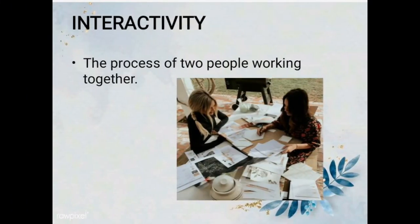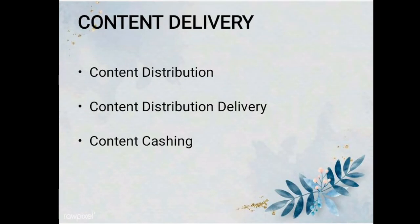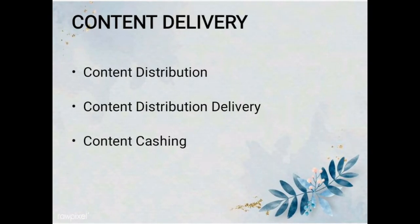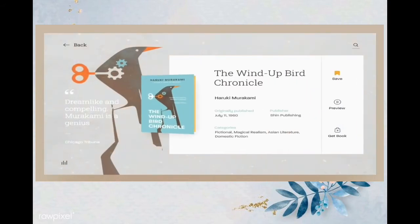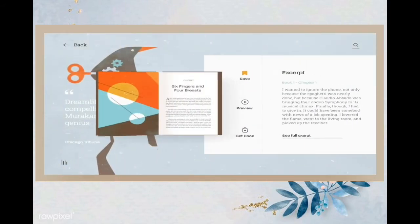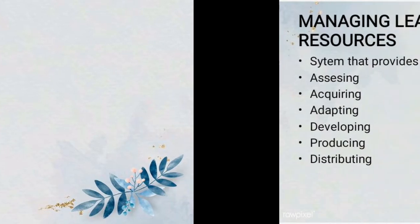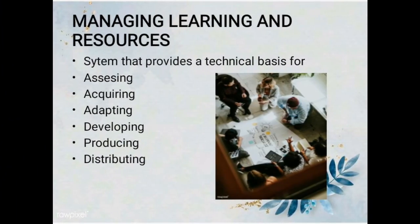Interactivity is the process of two people or things working together and influencing each other. Content delivery — sometimes called content distribution or content caching — is a service of copying the pages of a website to geographically dispersed servers.